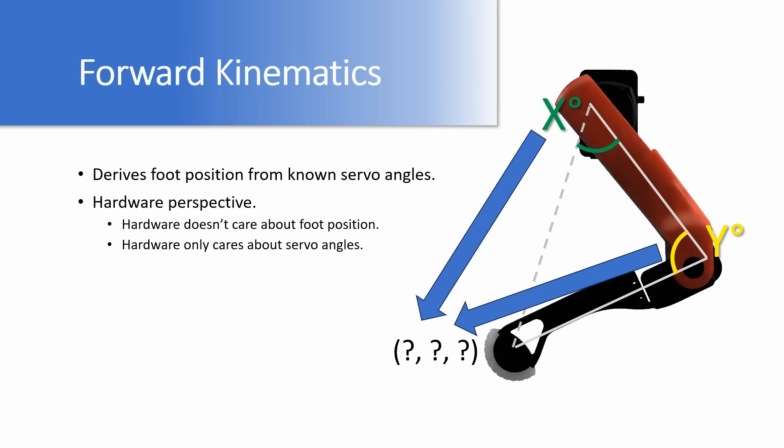So first off, let's talk about forward kinematics. What are they? Forward kinematics is a method of deriving the foot position from known servo angles. Now this is more of a hardware perspective because the hardware doesn't really care about the position of the foot. It only cares about the angles of the servos. The position of the foot is just derived from the angles of the servos and the length of the arms.